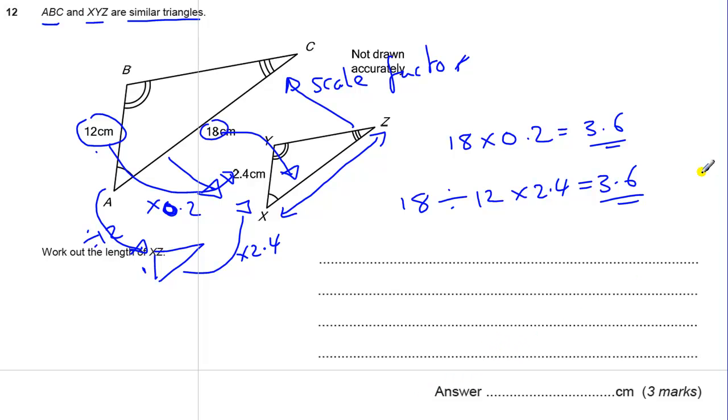Three marks. There is one mark for the answer 3.6. One mark for some method of seeing a scale factor. So this divided by 12 times by 2.4 or the 0.2. And then there is one for writing out a method of how to get from the 18 to the 3.6. So three marks.